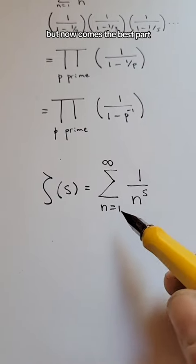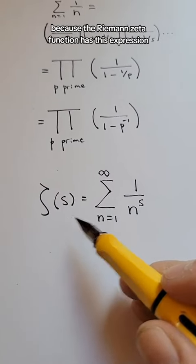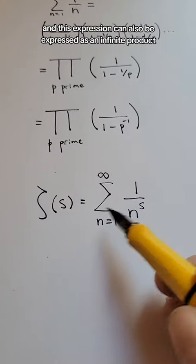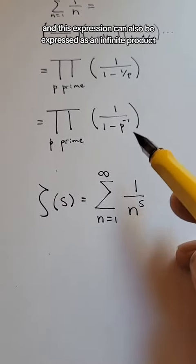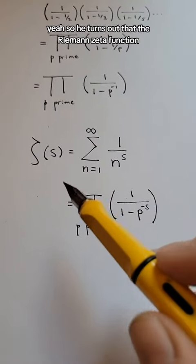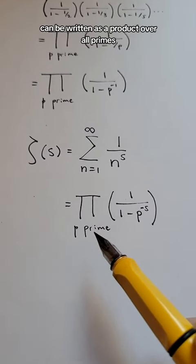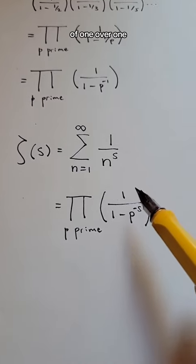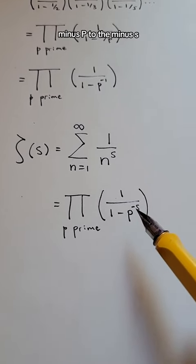But now comes the best part, because the Riemann zeta function has this expression, and this expression can also be expressed as an infinite product. Yeah, so it turns out that the Riemann zeta function can be written as the product over all primes of 1 over 1 minus p to the minus s.